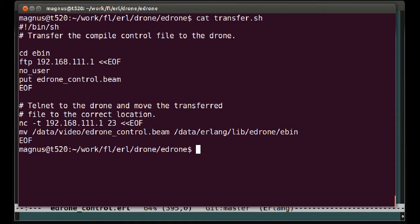To do that, we have a very simple transfer script that simply FTPs up to the drone the corrected beam file, the binary Erlang file, and then moves that file to the correct position. So let's execute that. The file is now stored on the drone in the correct position, but it has not yet been activated.